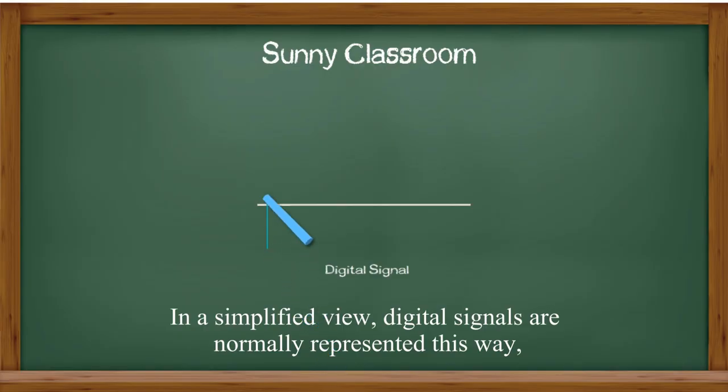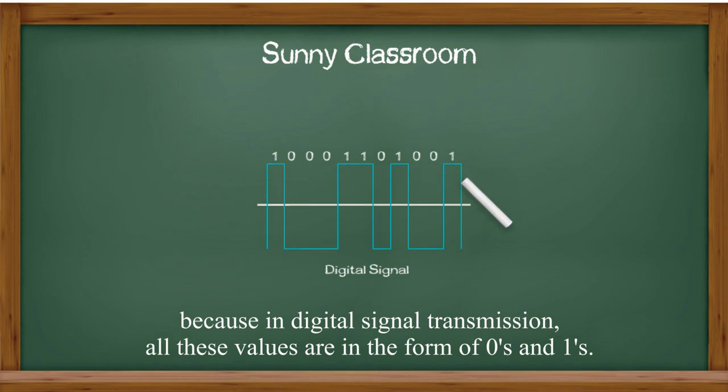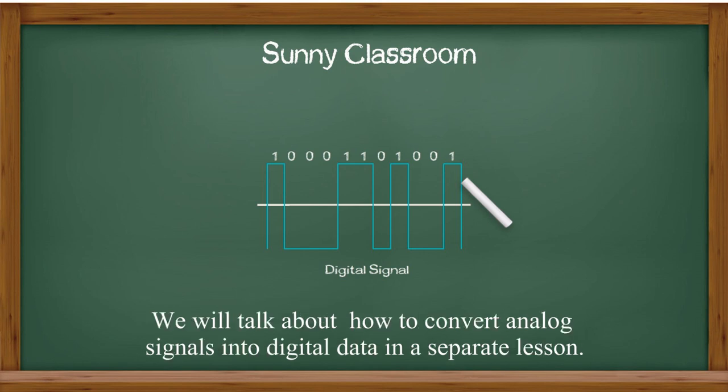In a simplified view, digital signals are normally represented this way, because in digital signal transmission, all these values are in the form of zeros and ones. And we will talk about how to convert analog signals into digital data in a separate lesson.